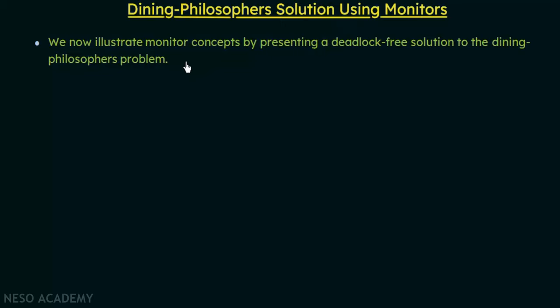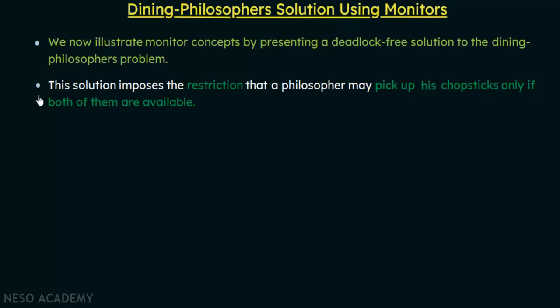This solution ensures there will be no deadlocks like those caused by semaphores. It imposes a restriction that a philosopher may pick up his chopsticks only if both of them are available — meaning both the left and right chopsticks must be available before he can pick them up.